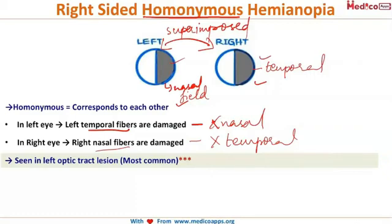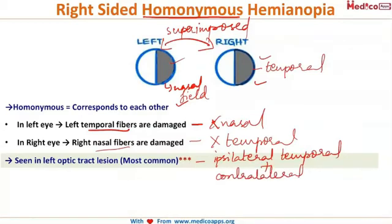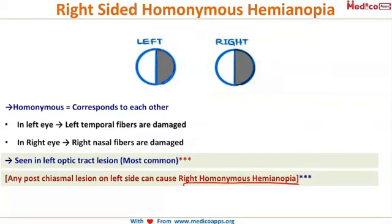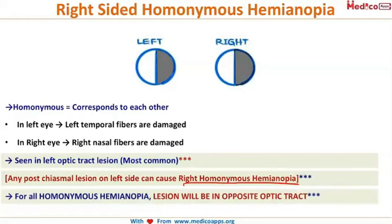The nasal fibers from each side cross over at the optic chiasma, whereas temporal fibers don't cross. The optic tract contains ipsilateral temporal fibers plus contralateral nasal fibers. Therefore, whenever there is an optic tract lesion, it causes homonymous hemianopia on the opposite side. By rule, any post-chiasmal lesion causes contralateral homonymous hemianopia — meaning the right side of the patient's visual field is lost in a left-sided lesion.